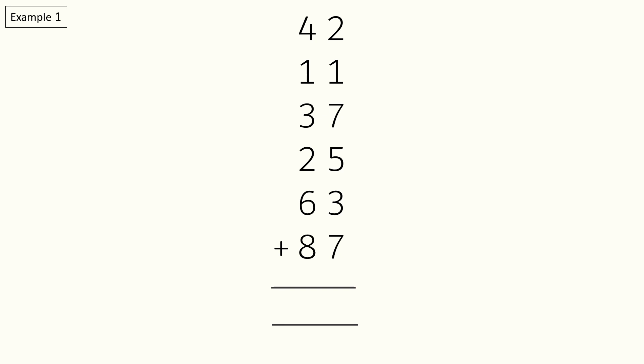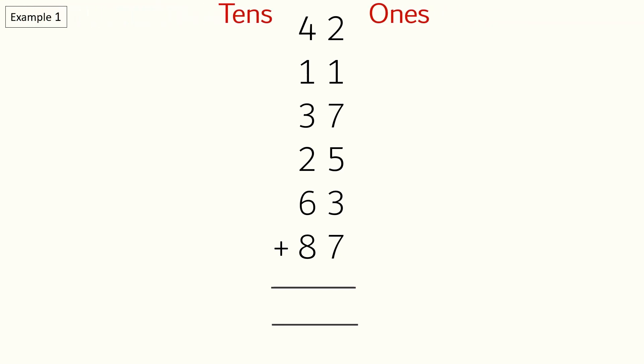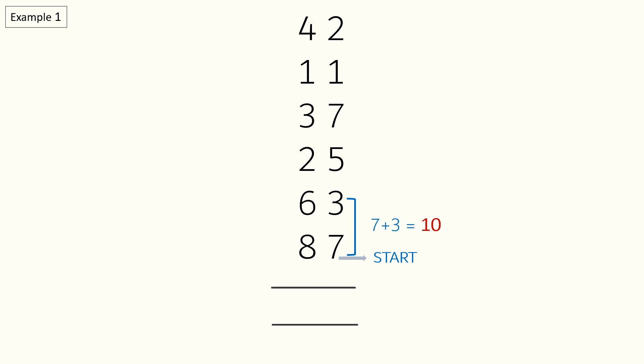We are going to solve this example step by step so that you feel absolutely comfortable with the concept. Here we have a bunch of numbers which we need to add. We have the ones or unit side and the tens side. We will start adding from the bottom digit on the ones side, keeping adding one digit at a time until they add up to 10. At that point we will stop and put a dot for 10. Here, 7 plus 3 is equal to 10, so we will put a dot above 3 for 10.